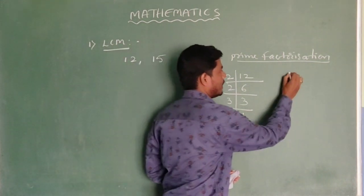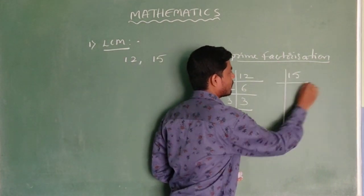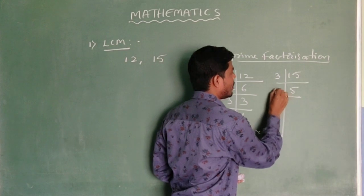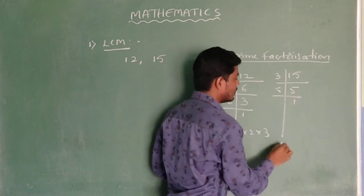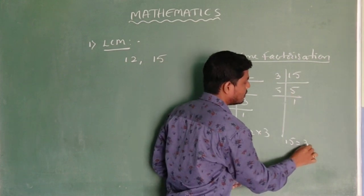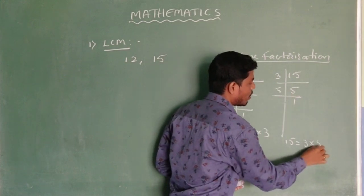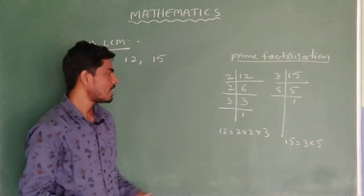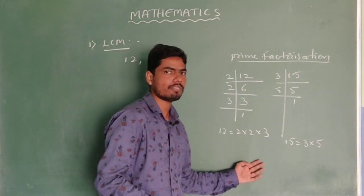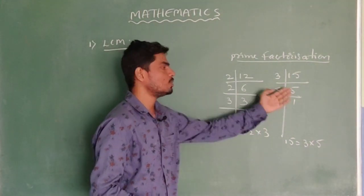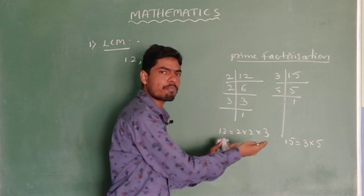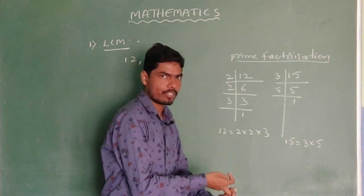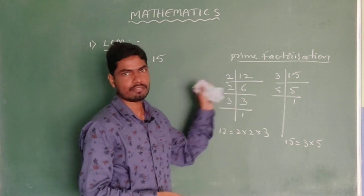Next, for 15: 3 times 5, and 5 times 1. So 15 can be written as the product of 3 × 5. This is called prime factorization for these two numbers. Now this process we have to use to find the LCM.